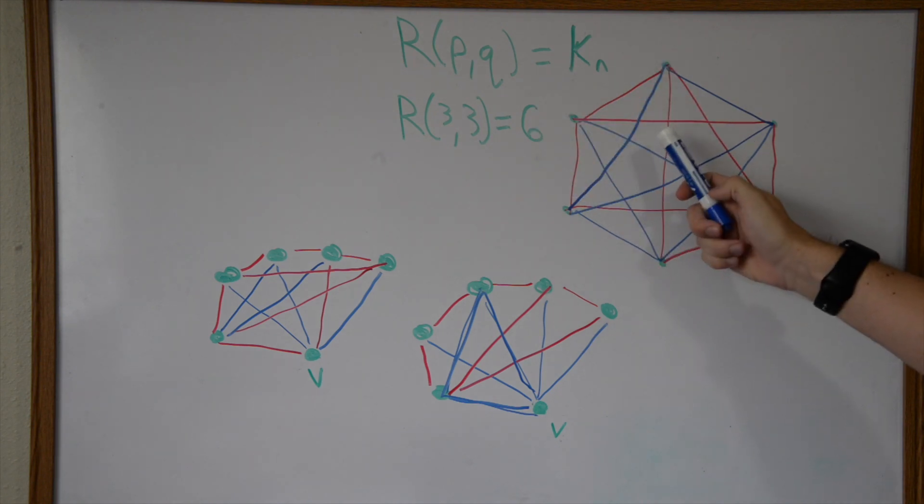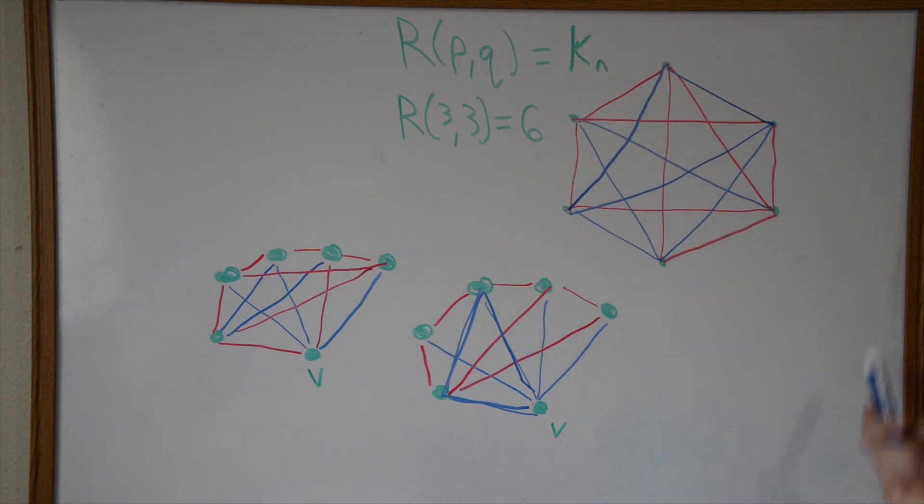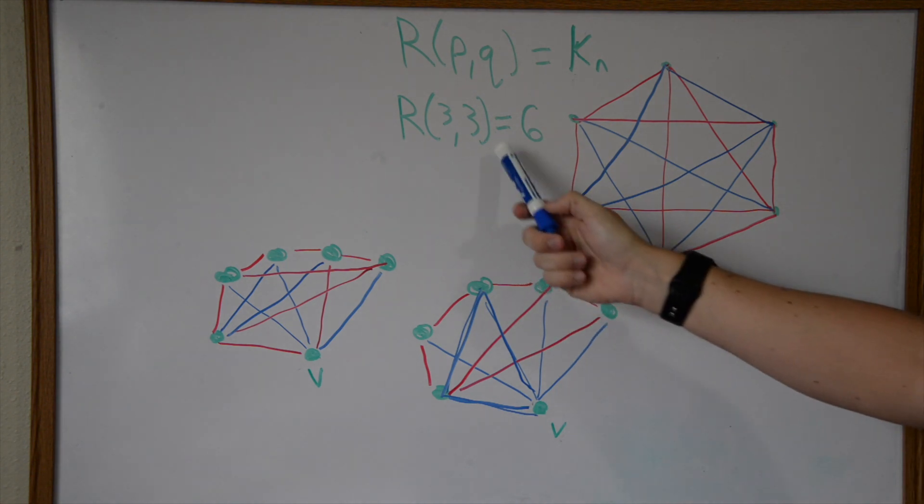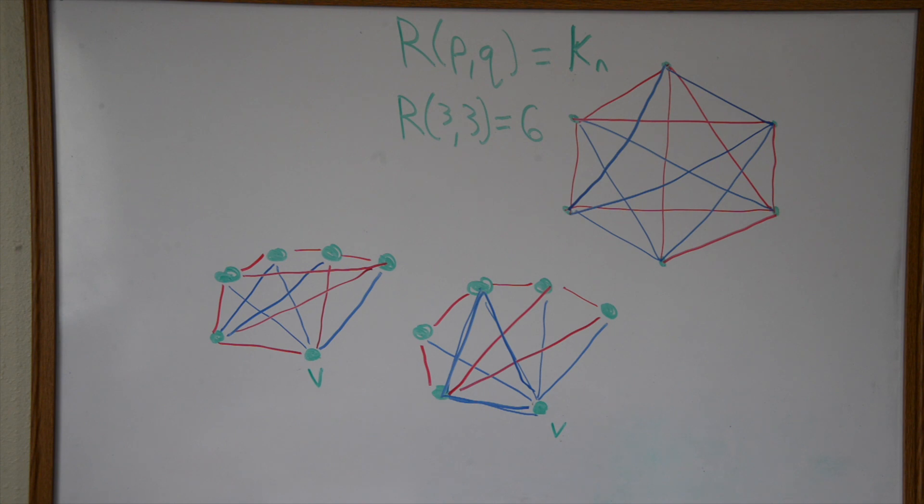This is basically one of the more simpler ones that you could do. Obviously if we're talking about a complete graph on like one or two vertices, one is trivial, two is very easy to illustrate with a square or a Pentagon or something like that. This is basically the simplest one I can do that still shows a little bit of complexity.